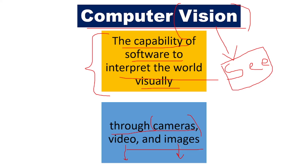Vision is important. Just as eyes have vision, this is computer vision. Through cameras, videos, and photos, the computer has the capability to see the world visually. This is computer vision.